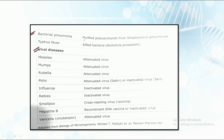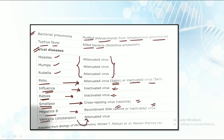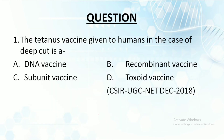For bacterial pneumonia, we use purified polysaccharide from Streptococcus pneumoniae. For typhoid fever we use killed bacteria. For viral diseases: measles, mumps, and rubella use attenuated viruses. For polio, either an attenuated virus (Sabin) or inactivated virus is used. Influenza and rabies both use the inactivated virus. Smallpox uses a cross-reacting virus. Hepatitis B uses a recombinant DNA vaccine or inactivated virus. Varicella uses an attenuated virus.